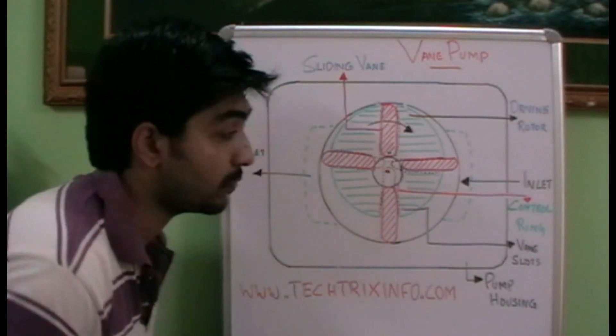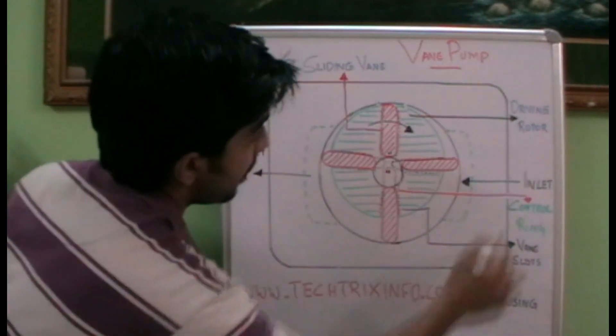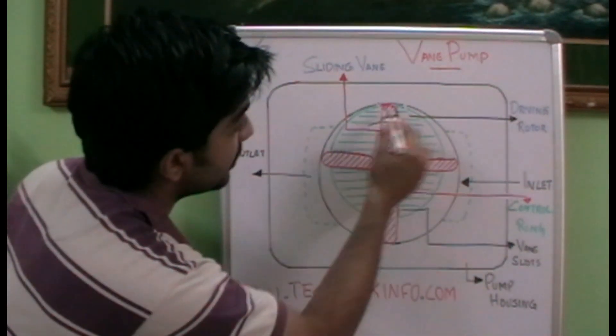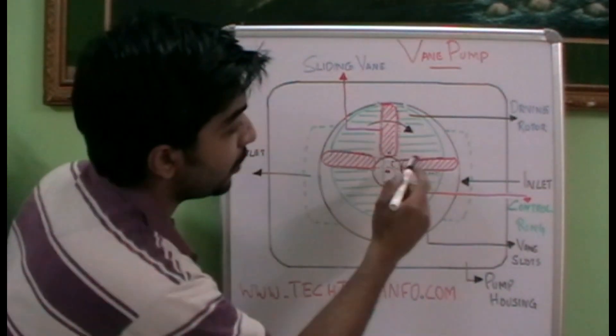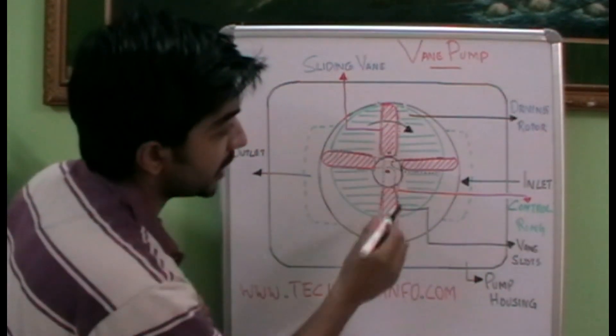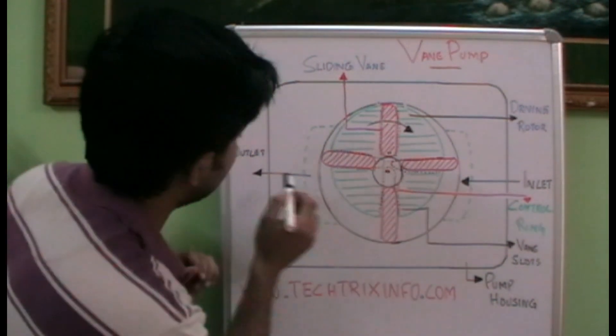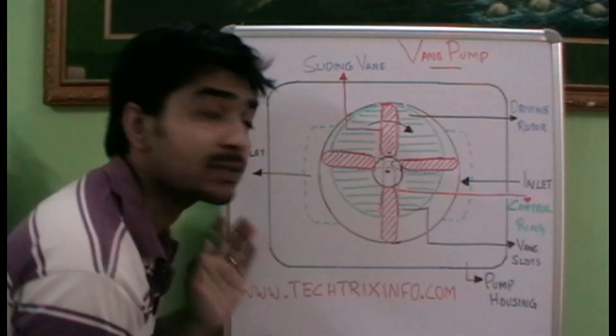So let's identify the main components of the vane pump. This is the pump housing as it's marked over here. We have the driving rotor which is marked in green, the vanes which are marked in red, a control ring at the center, and this is the inlet and this is the outlet. So these are the main components of a vane pump.